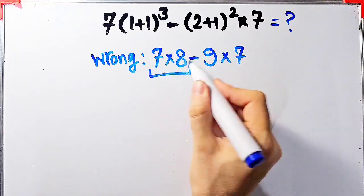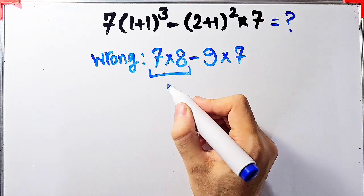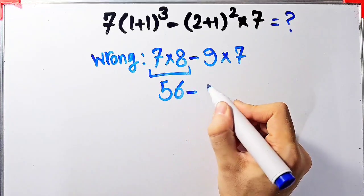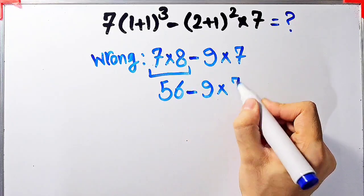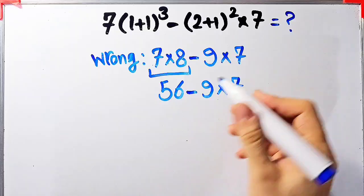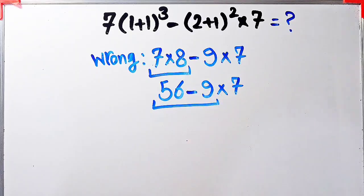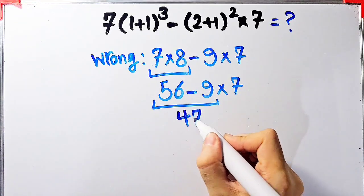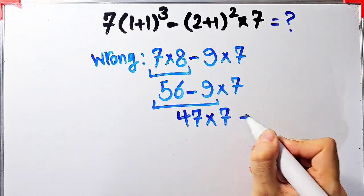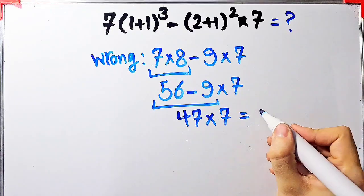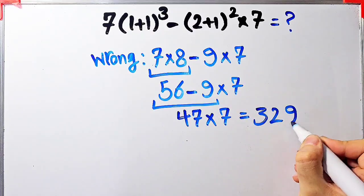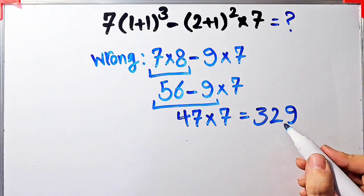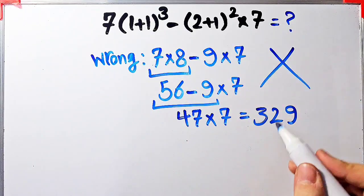They calculate 7 × 8 = 56, then 56 − 9 × 7, then 56 − 9 = 47, and 47 × 7 = 329. They say the final answer equals 329, but this answer is definitely wrong.